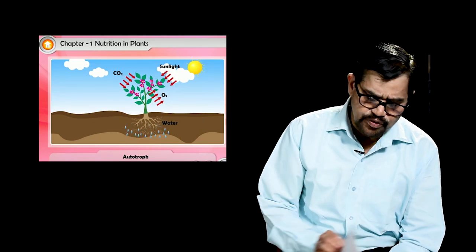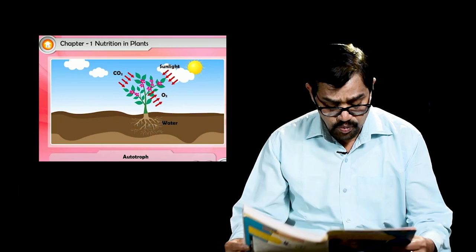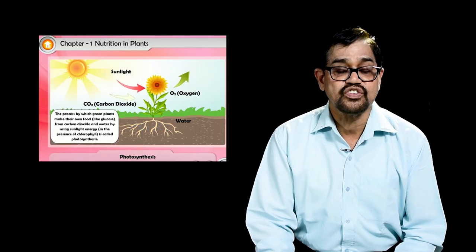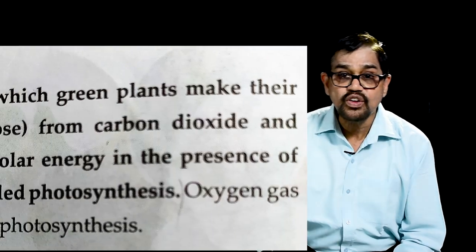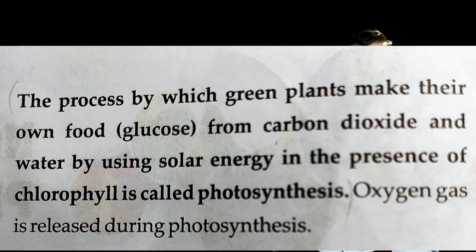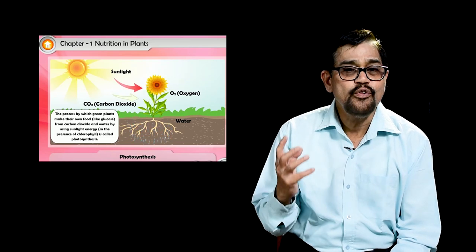In autotrophic mode of nutrition, when we turn to page 8 of the textbook, we come to the term photosynthesis. Photosynthesis is a process by which green plants make their own food — that is, glucose — from carbon dioxide and water, using solar energy in the presence of chlorophyll and sunlight.